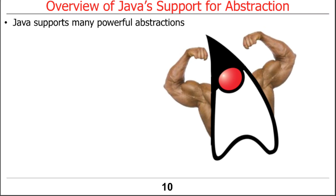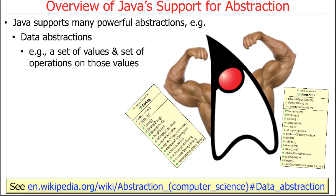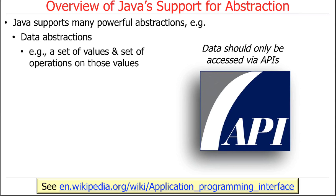Java supports a whole bunch of powerful abstractions. There's data abstractions, which are basically sets of values and operations that operate on those values. The key concept in data abstraction is that data or state should only be accessible through APIs — application programming interfaces.